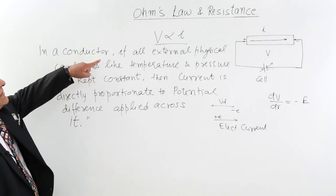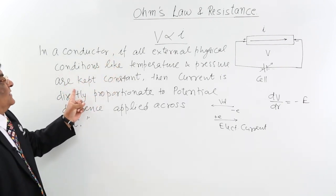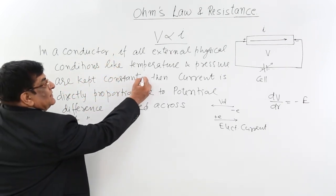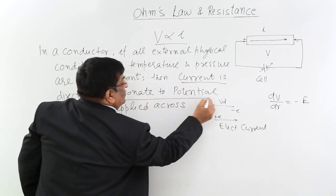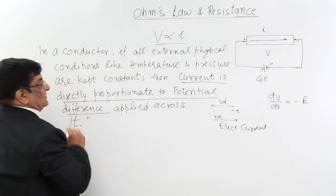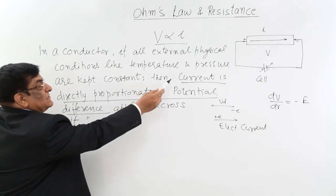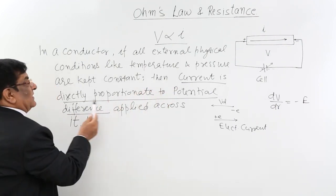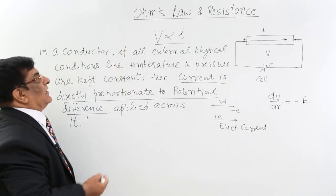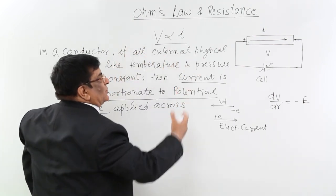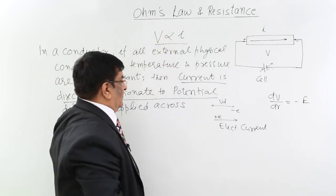Ohm's law states: in a conductor, if all physical conditions like temperature and pressure are kept constant, then current is directly proportionate to potential difference applied across it. We can write this as V proportionate to I, or equivalently I proportionate to V. The customary form is V proportionate to I.